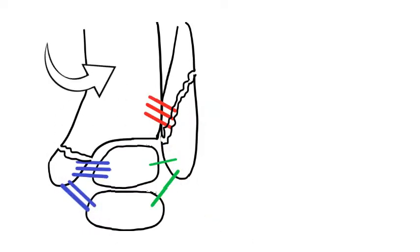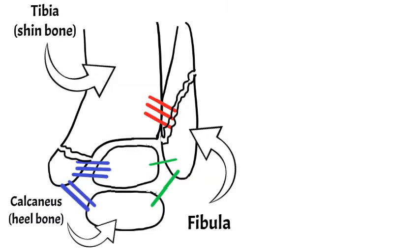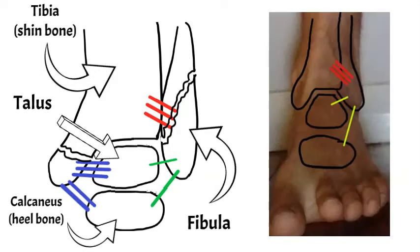We'll go bit by bit. The first bone we're marking out from the front is the tibia, or the shin bone. The second is the fibula — the bone on the little toe side of your ankle. The third is the calcaneus, or the heel bone. And the fourth is the talus, which makes up your ankle together with the fibula and the tibia.